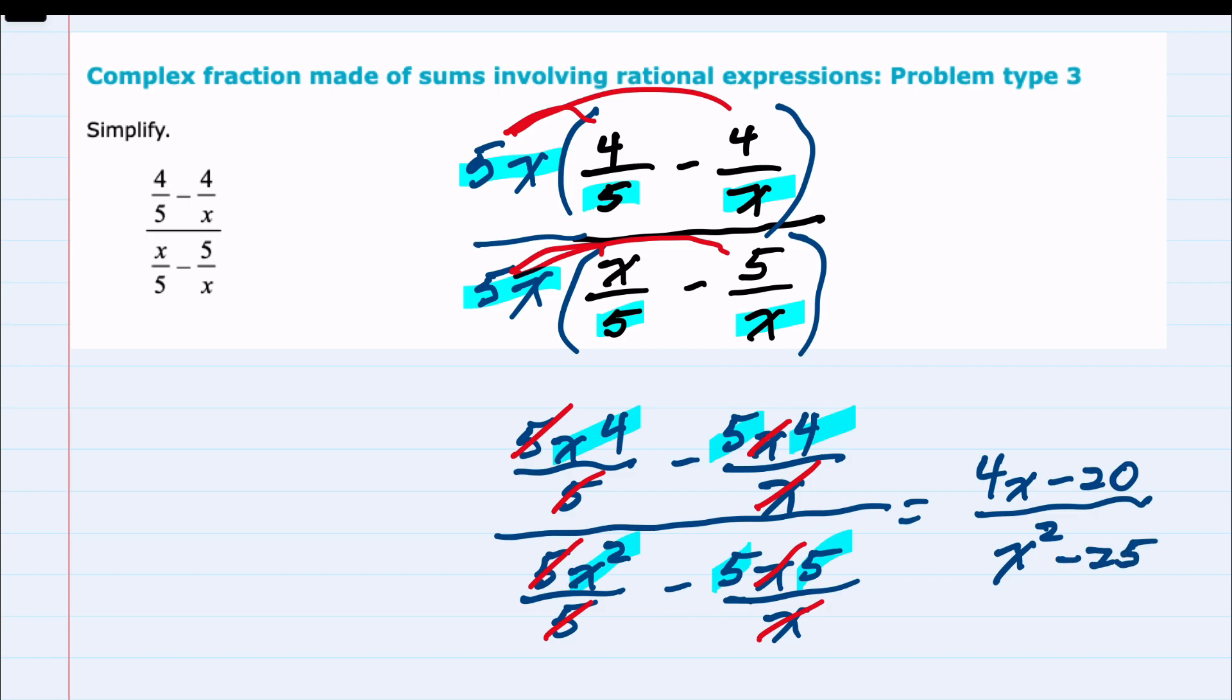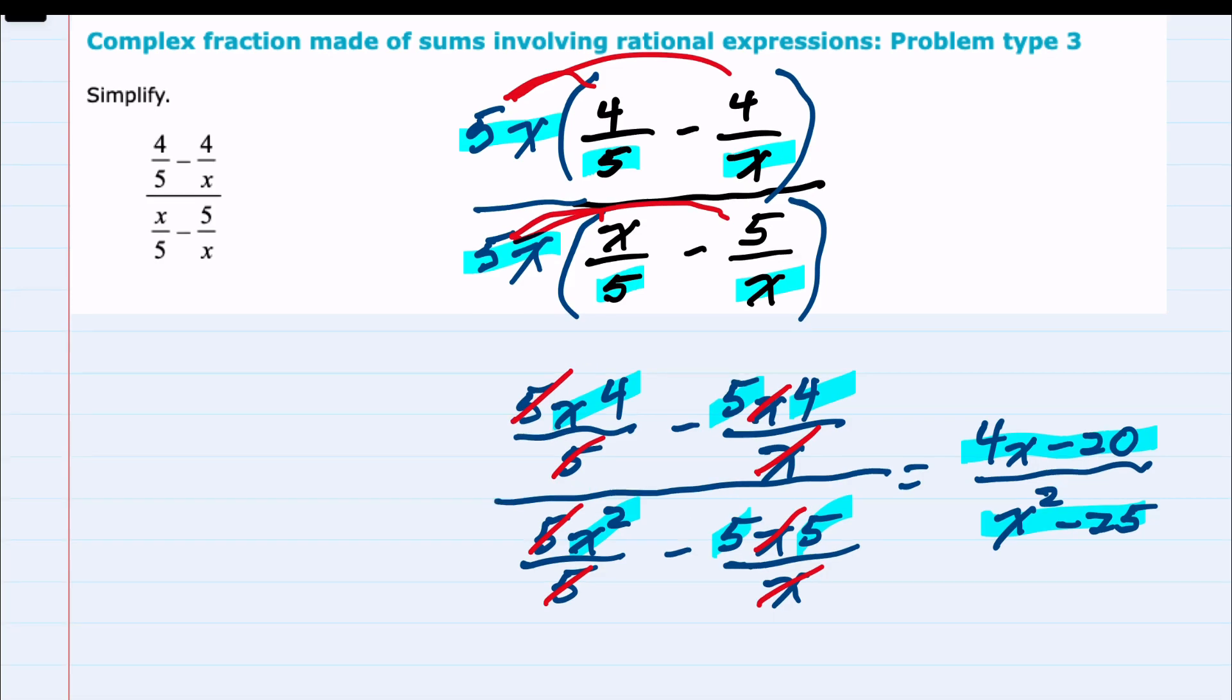So we've come a long way we've simplified the complex fraction. However we should always simplify as much as possible. And I notice that both this new numerator and the new denominator are both factorable. And so it may be that some of those factors will cancel.